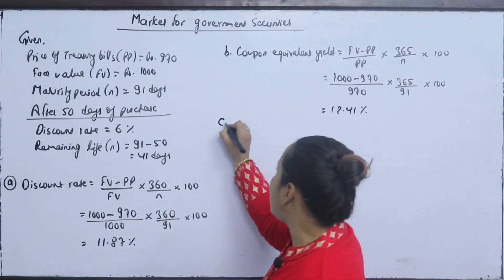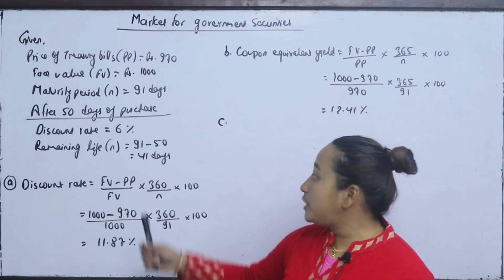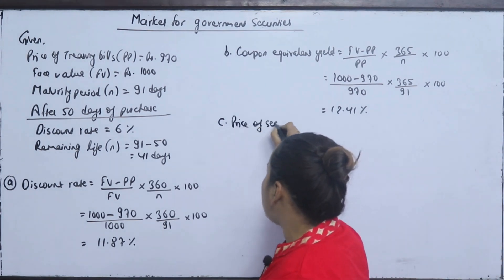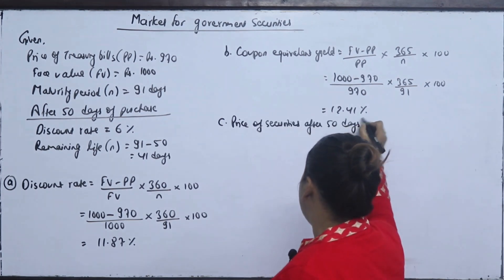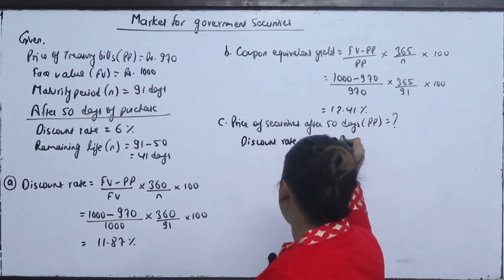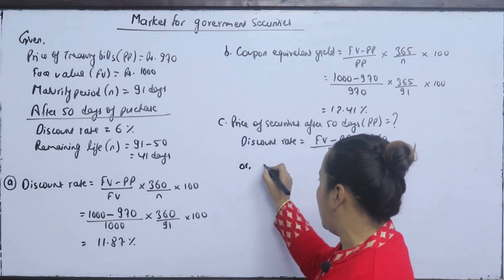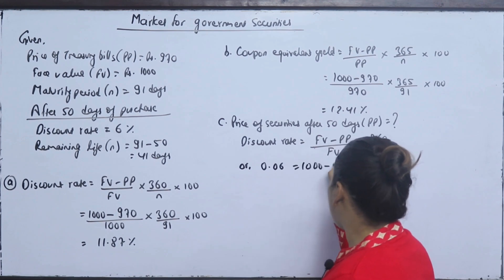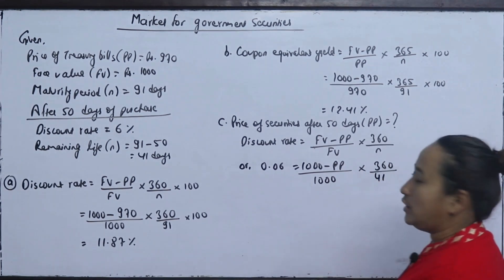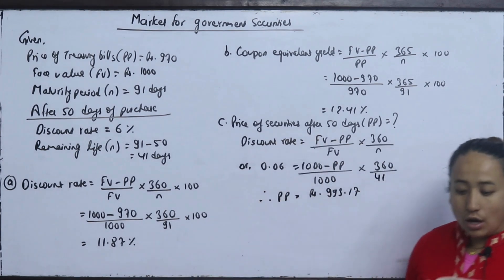Now, the price of the treasury bill after 50 days: the discount rate is 6% and the remaining life is 41 days. Using the discount rate formula: 0.06 = (1,000 − PP) / 1,000 × (360 / 41), solving for PP gives a price of securities equal to 993.17.